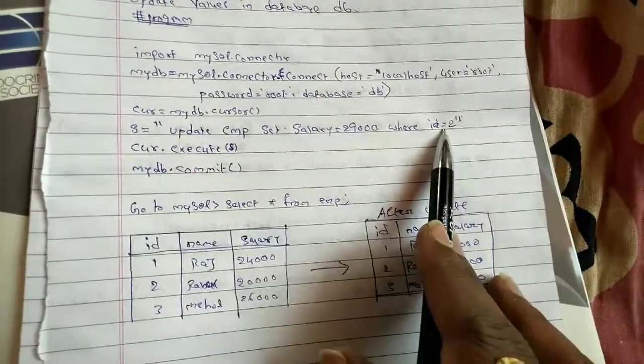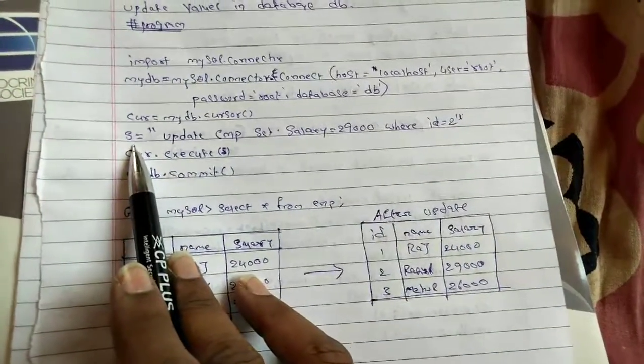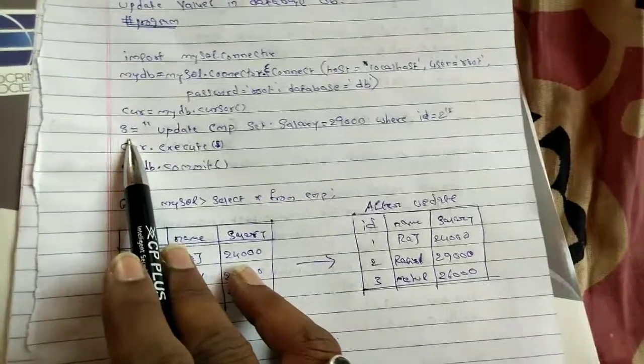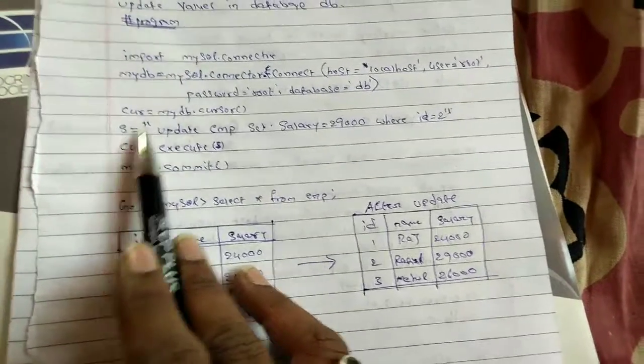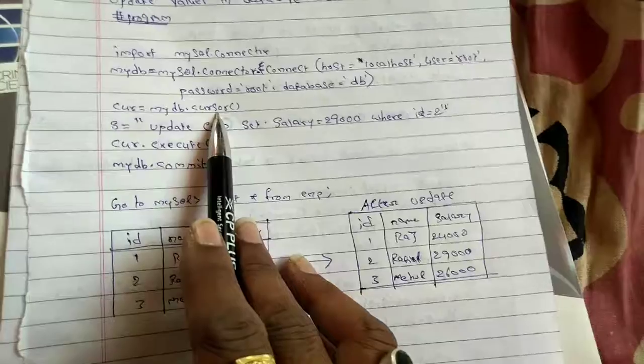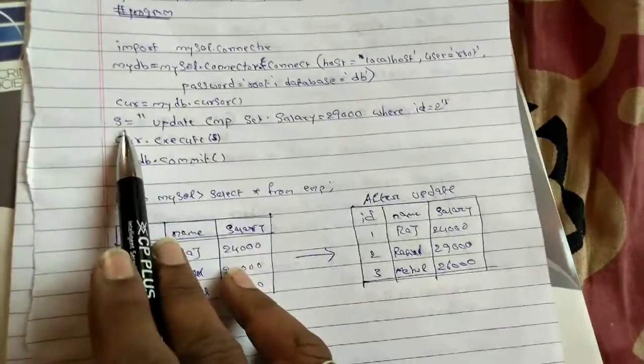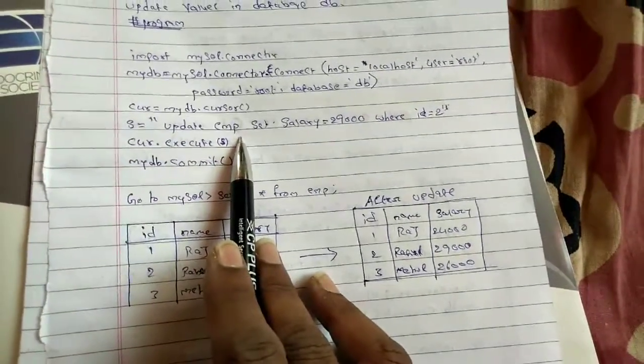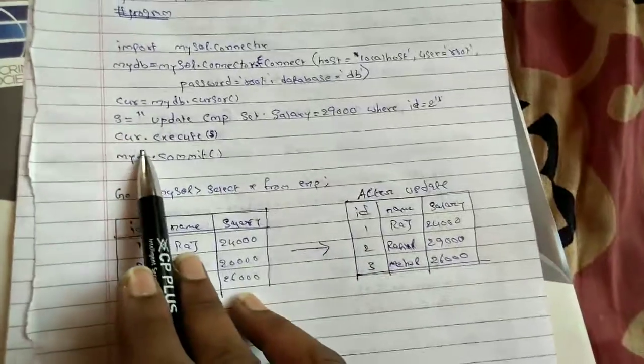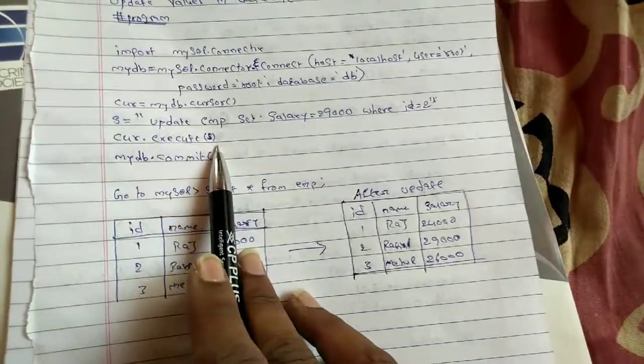I have given this command which will be stored in a variable called yes. So now this command must be executed by using a cursor, because cursor will execute these queries by using the cur variable. So cur.execute in bracket yes.